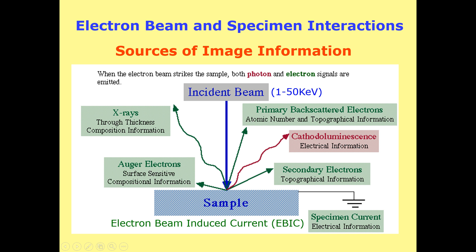The electron beam and specimen interaction is the key factor because of which electron microscopy becomes possible. We have the possibility of getting images with the help of electron microscopy just because of the electron beam and specimen interactions. Here we have a summary for the incident beam interaction with the sample and the information that is created after the electron beam interacts with the sample.